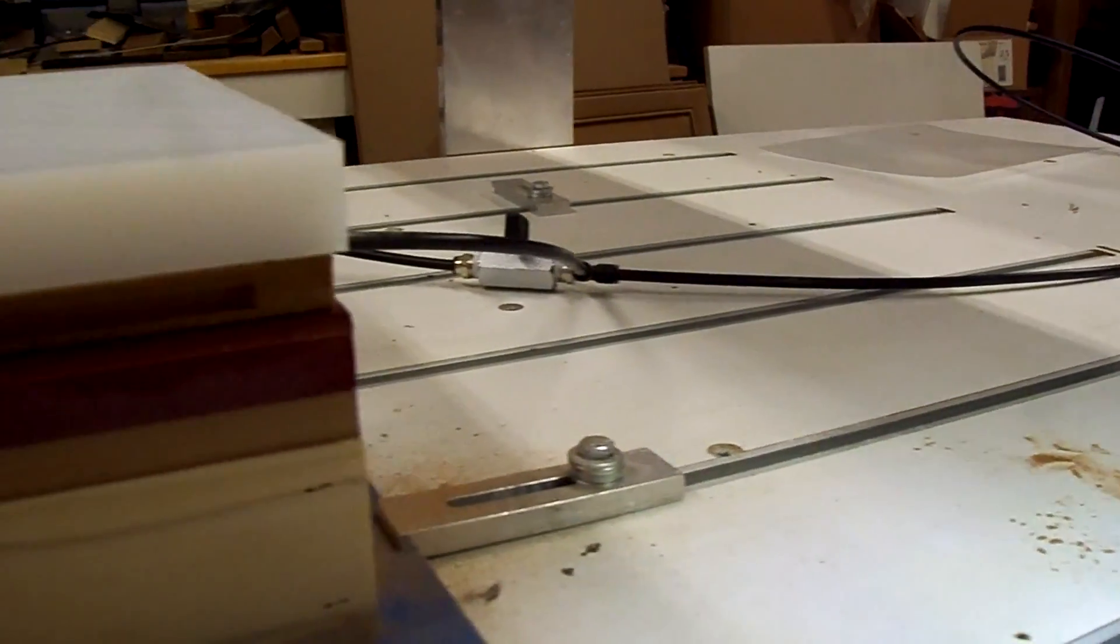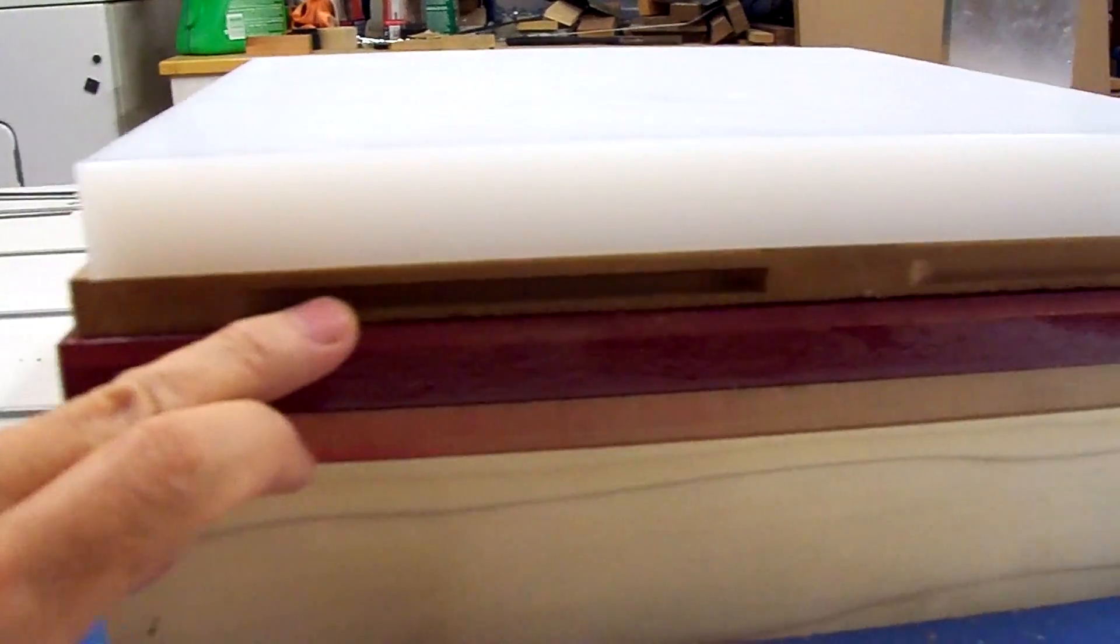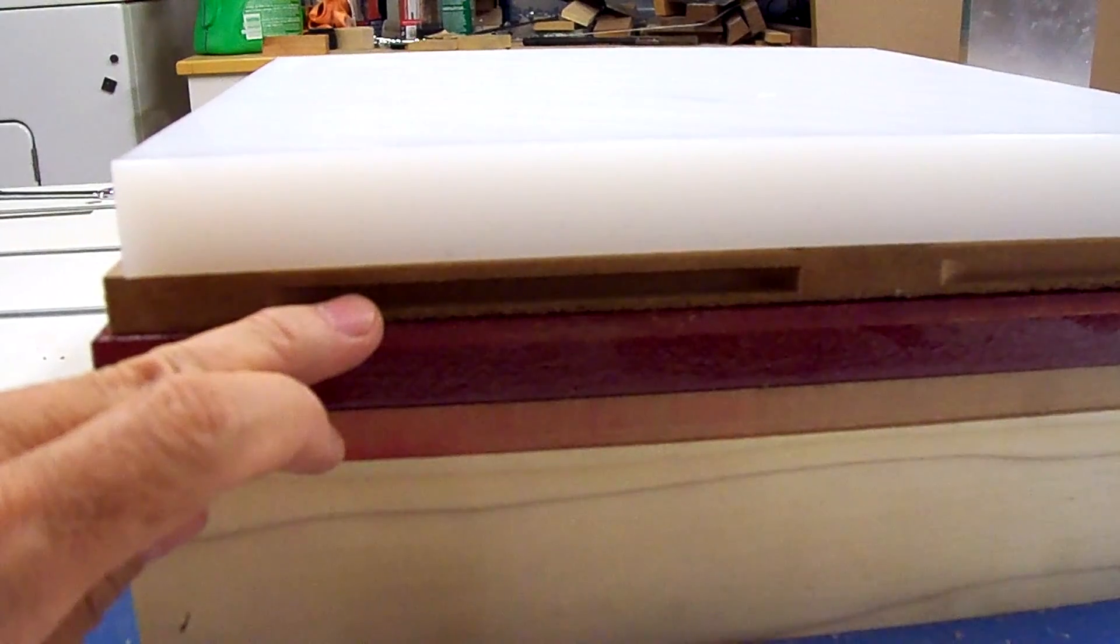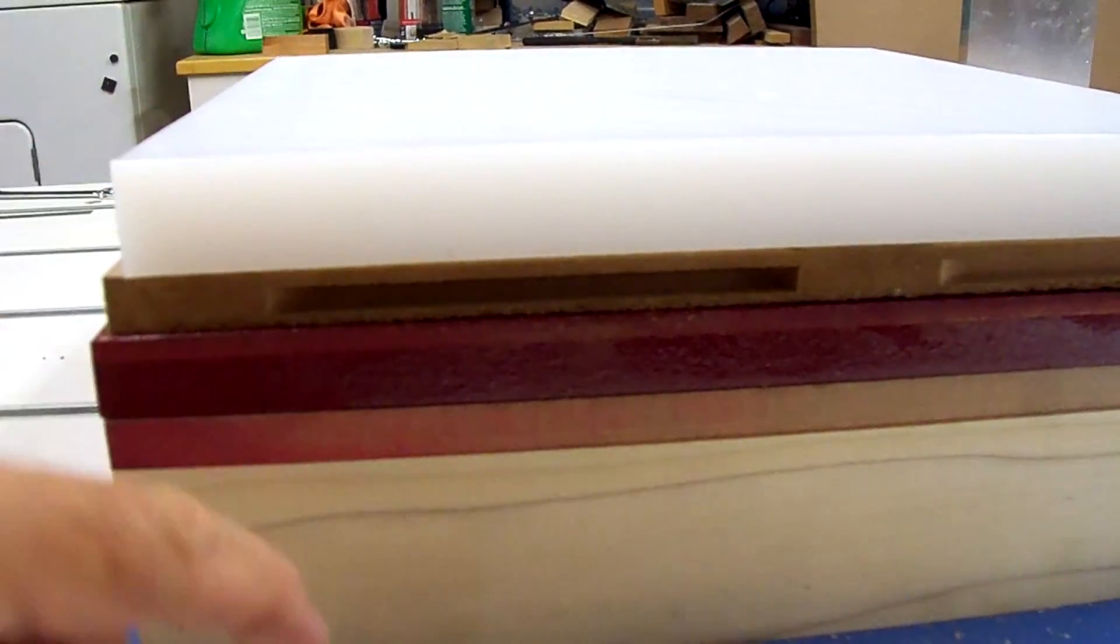And then we'll put the three-wing cutter in, turn the vacuum on, and cut these slots. I've already got the program, the cam program, done for cutting these slots all the way around on all four sides.